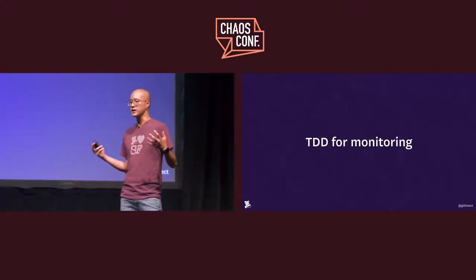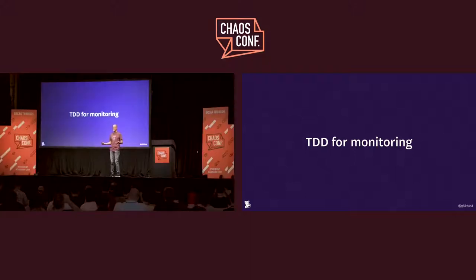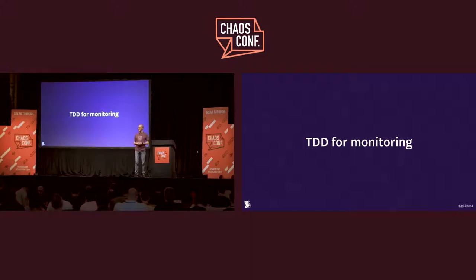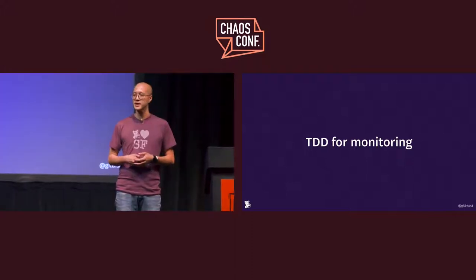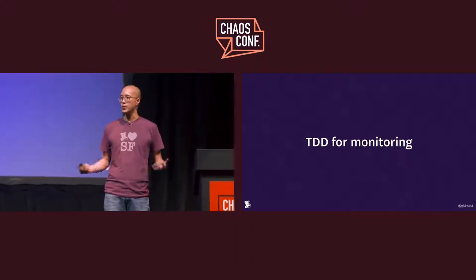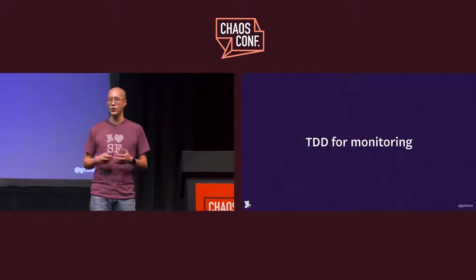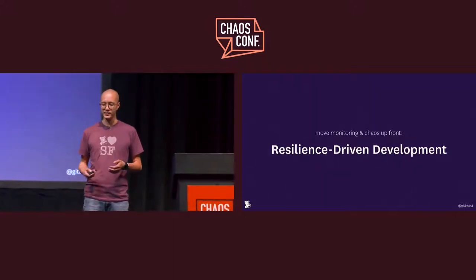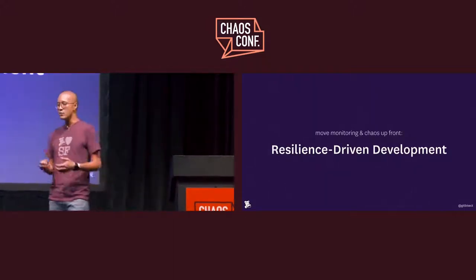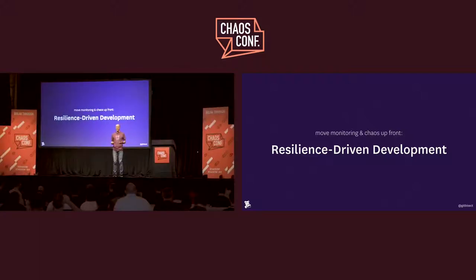It's what I like to call TDD for monitoring. We've had this notion of writing tests up front for decades, and yet we haven't really been doing it with the operational functionality of our code. We write unit tests, we might do some integration tests, but what about for the rest of what's required for running our code in production? So, I like to say that moving monitoring up front with chaos — rather than just being test-driven development — is resilience-driven development.